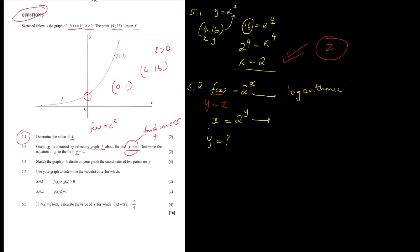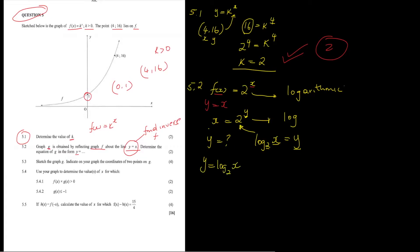The inverse of an exponential is a logarithmic function, so we need to write x = 2^y in logarithmic form to make y the subject. The log asks: what is the exponent that gives us x with a base of 2? That exponent is y. So the equation becomes y = log base 2 of x, and that is the answer.